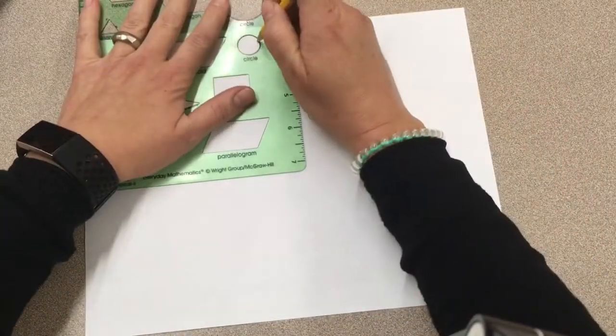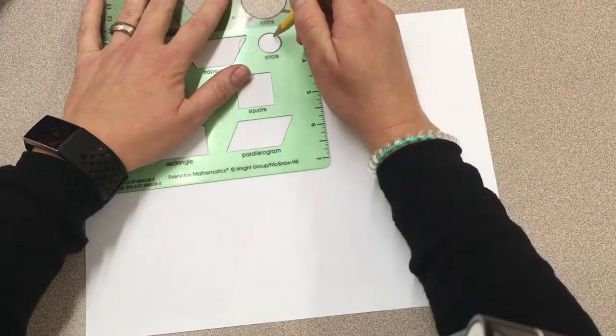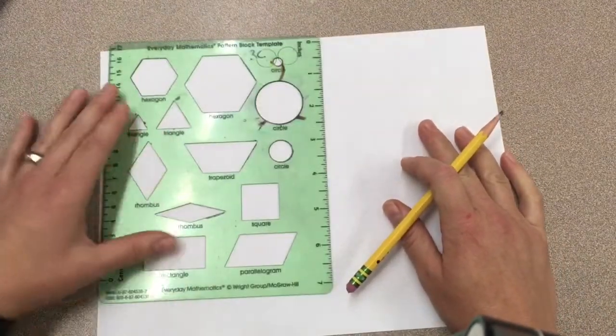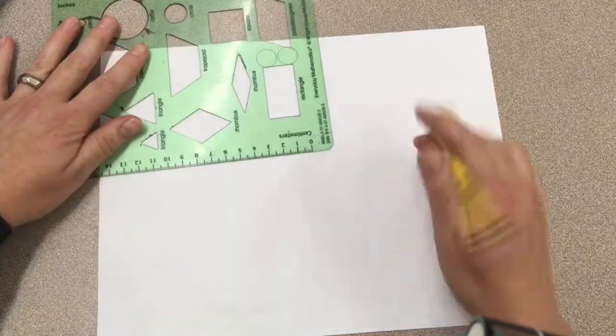I'm going to give myself enough room so I'm going to do two circles for those eyes and then for the body I'm going to make a rectangle.